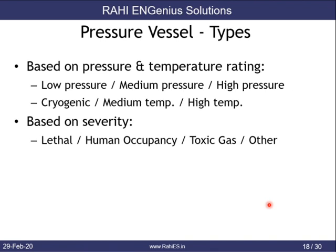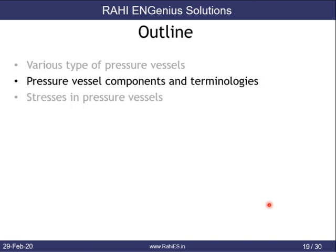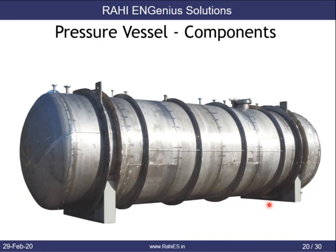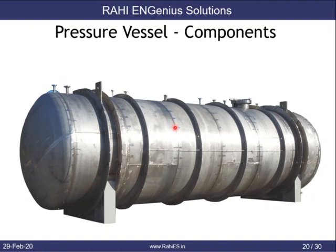Let's now talk about the various components used in a pressure vessel. These are cylindrical shells — it's a welded construction. The weld joint that connects the rolled plate together is called a longitudinal seam, or long seam. The joint connecting two cylinders together is called a circular seam, circumferential seam, or girth seam.